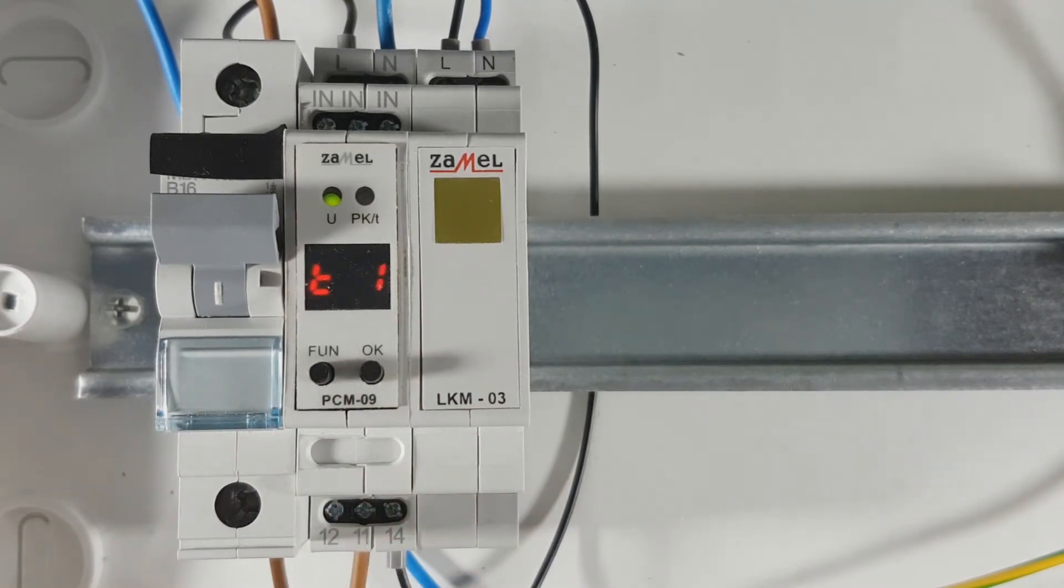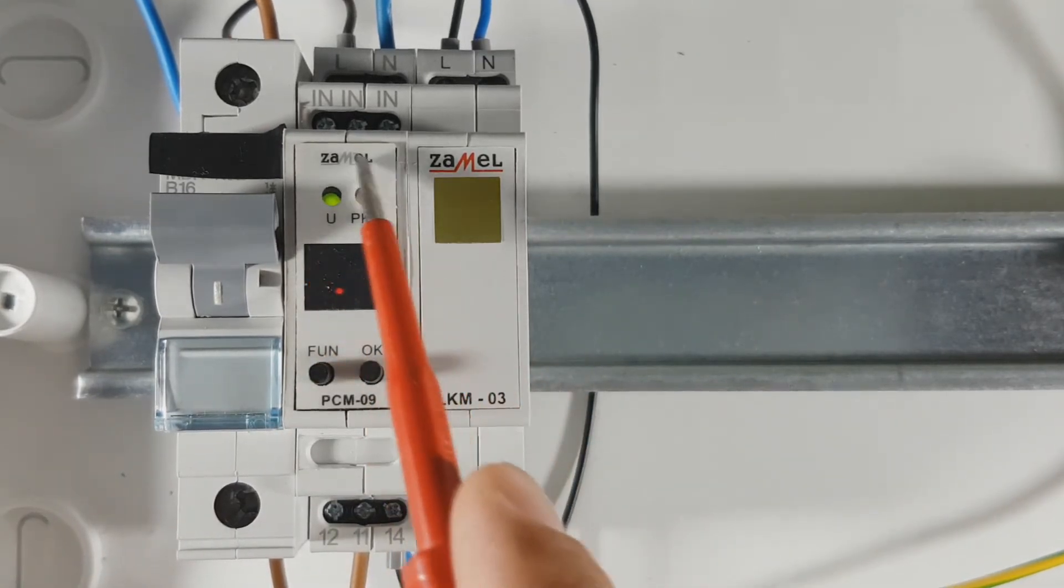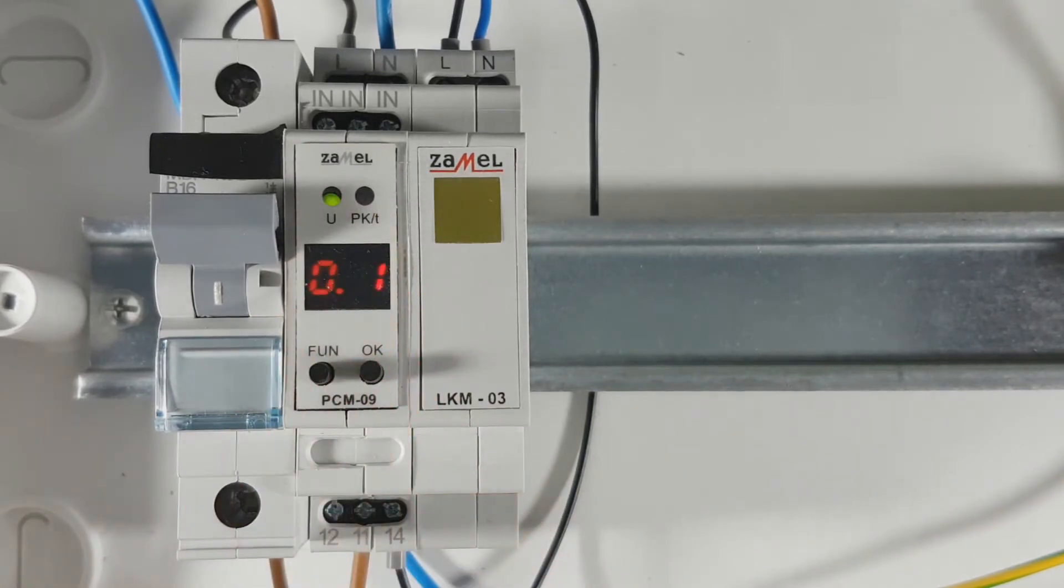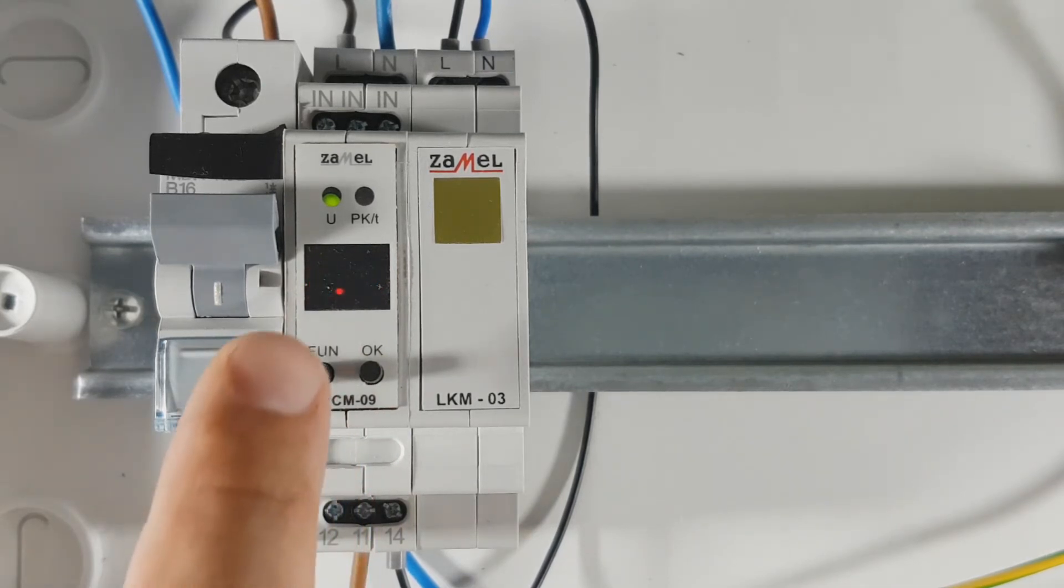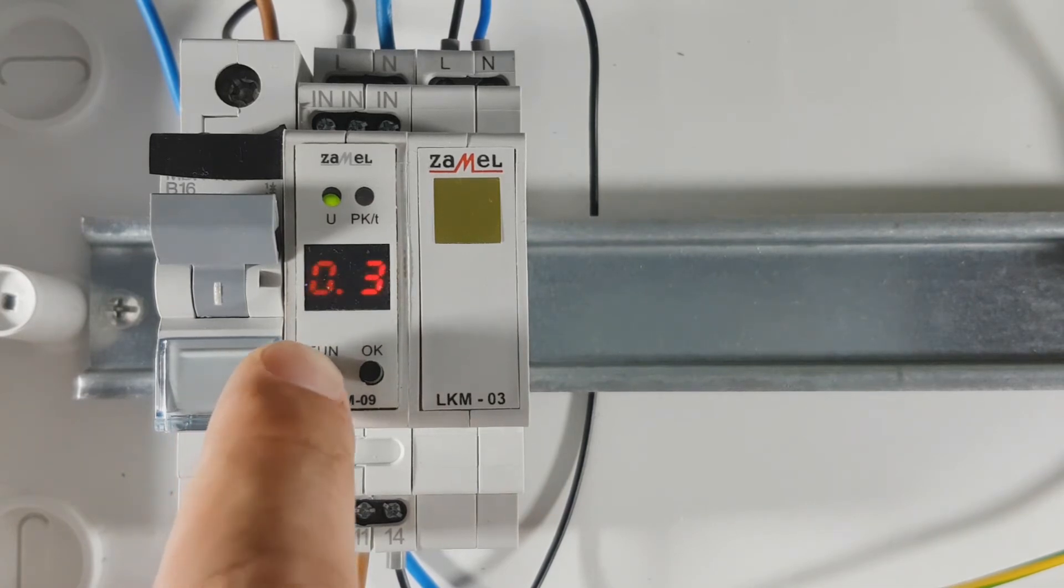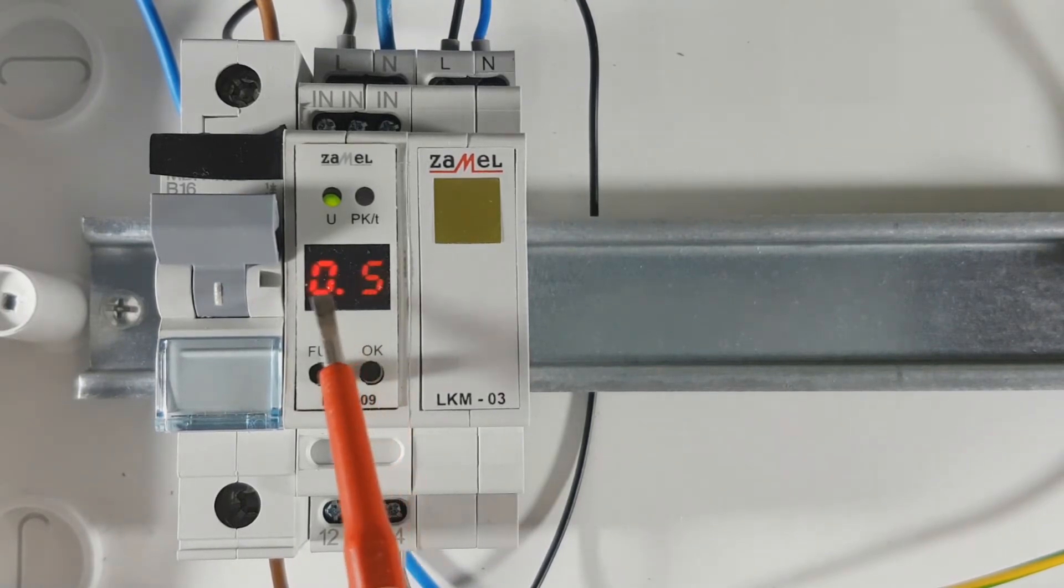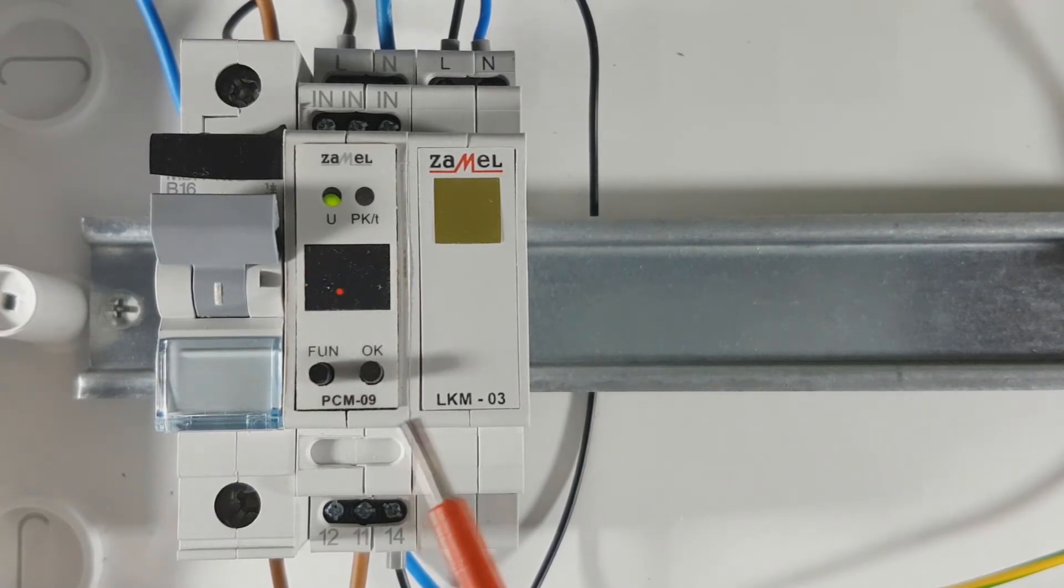Enter the menu by pressing the OK button. The PK LED indicates whether the time format will be in tenths of seconds, seconds, minutes, or hours. For example, setting the time T1 as half a second. For this purpose, increase the value indicated on the display by pressing the function button several times. The value appears on the display. Confirm it by pressing the OK button.